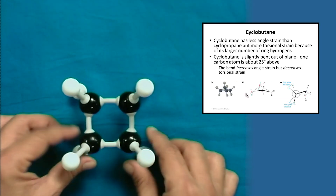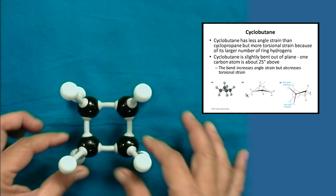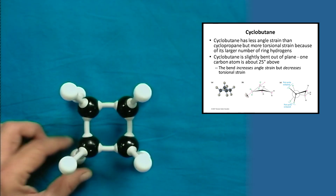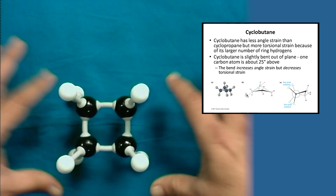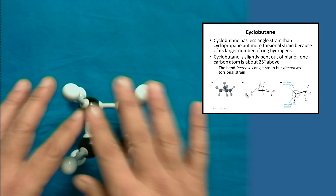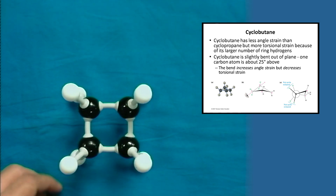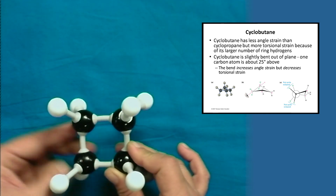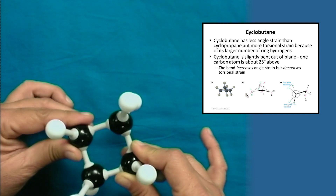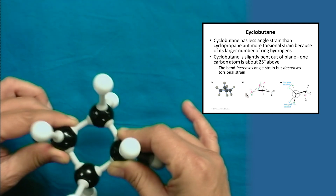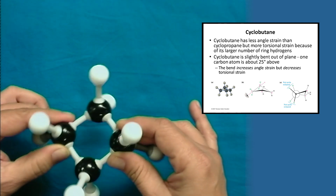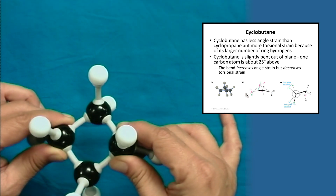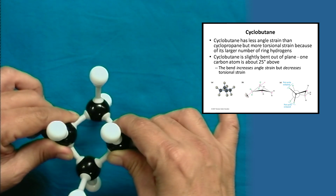For cyclobutane, you can see all four carbon atoms are in the same plane as Baeyer explained — planar — and the hydrogen atoms are having some sort of repulsions between them. As you can see, its planar nature is slightly distorted and its shape is a bit strained, with some 25 degrees of bond angle deviation to avoid the interactions between these atoms. So its bond angle is 90 degrees with approximately 25 degrees of puckering.